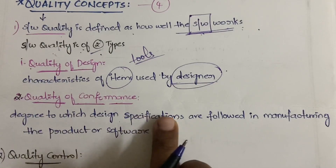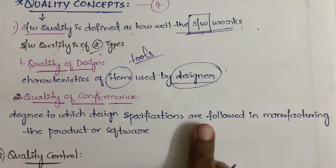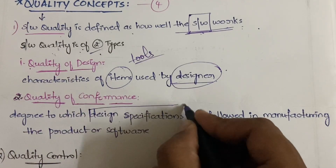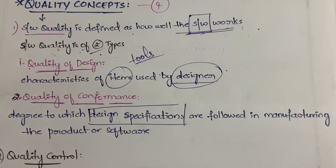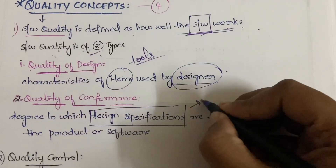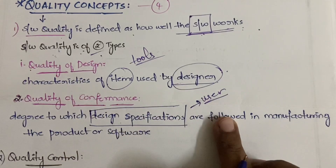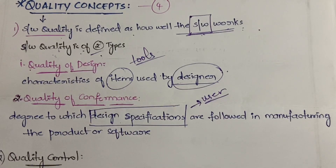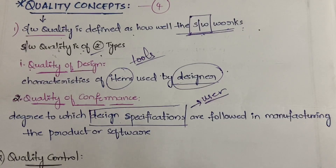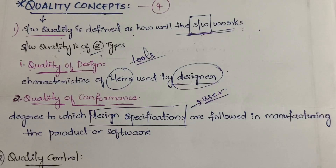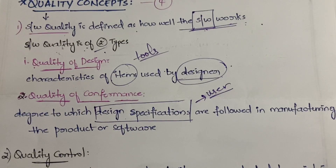The second type is quality of conformance, which is the degree to which design specifications are followed in manufacturing the product or software. The design specifications are defined by the user — for example, whether the design should be triangular, circular, or square, simple or complex. Quality of conformance checks whether everything specified by the user is being followed during manufacturing.